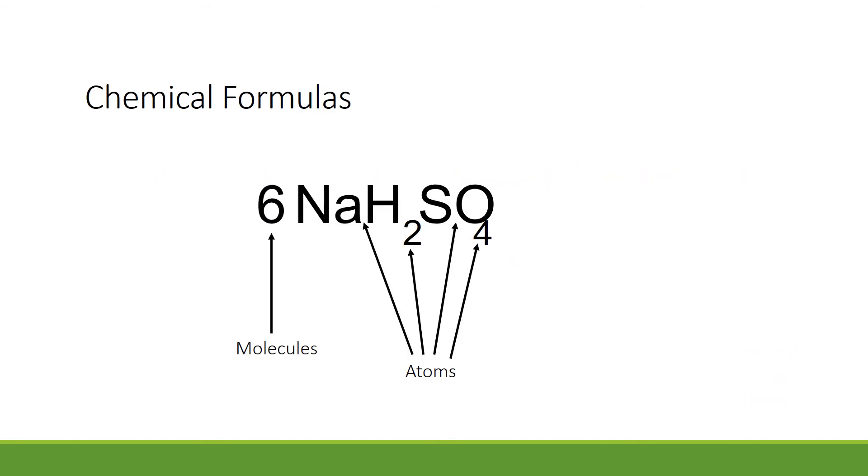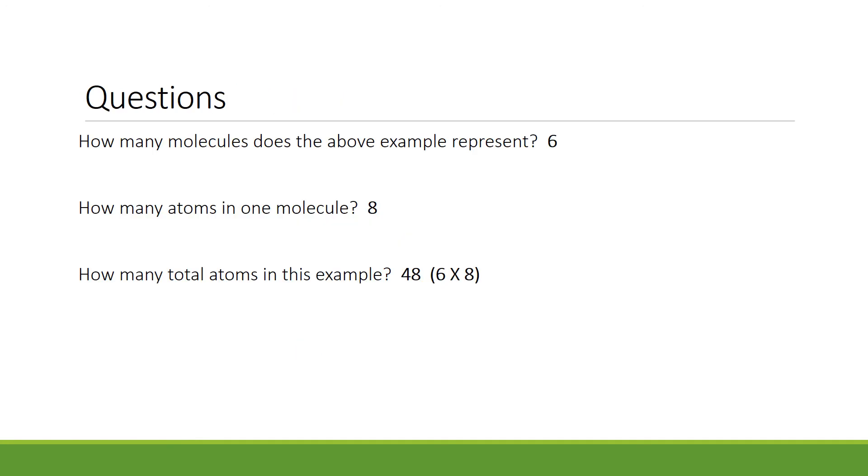When you look at a chemical formula such as this, 6NaH2SO4, you need to be able to determine the number of molecules and the number of atoms. The number of molecules is indicated by the number in front of the molecule. The number of atoms is indicated by adding together the number of atoms that compose one molecule. So, in the previous example, 6NaH2SO4, there are six molecules. Again, remember that's the number in front.